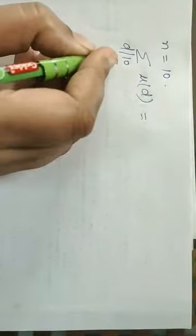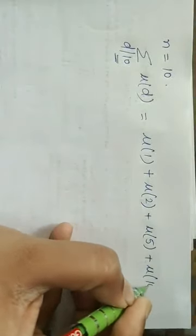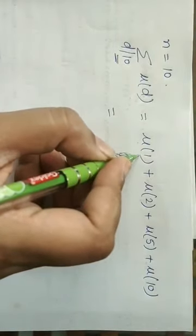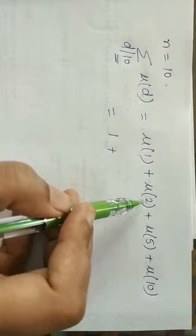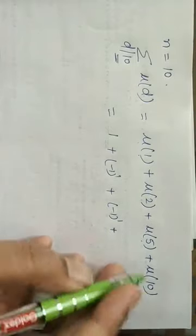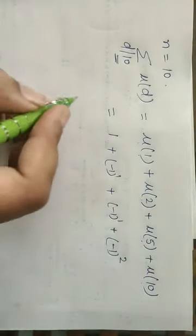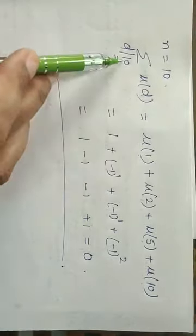We can verify this for n = 10. The divisors of 10 are 1, 2, 5, and 10. Now μ(1) = 1, μ(2) = −1 (one prime), μ(5) = −1 (one prime), and μ(10) = μ(2×5) = (−1)² = 1. So the sum is 1 + (−1) + (−1) + 1 = 0, confirming that for n = 10 > 1, Σ_{d|n} μ(d) = 0.